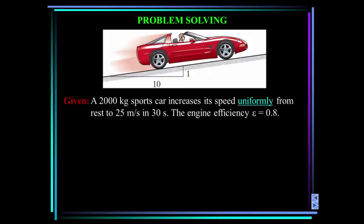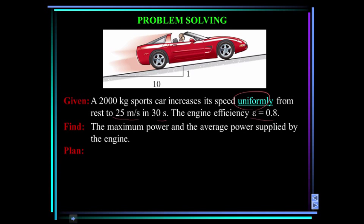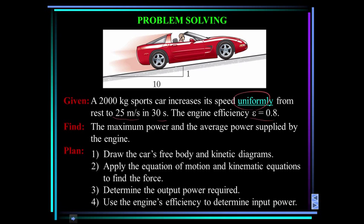Here's another problem. You have a 2000 kg sports car. It's increasing its speed uniformly, that means constant acceleration. Starts at rest and it goes to 25 meters per second in 30 seconds. The engine efficiency is 0.8. Find the maximum power and the average power supplied by the engine.